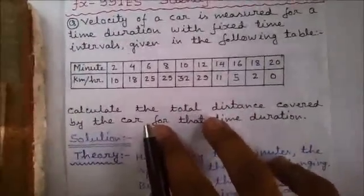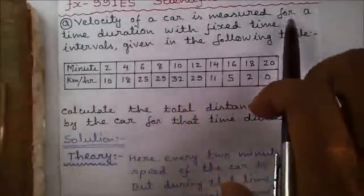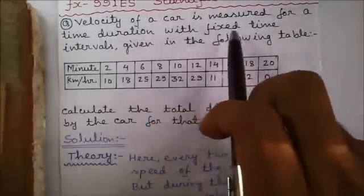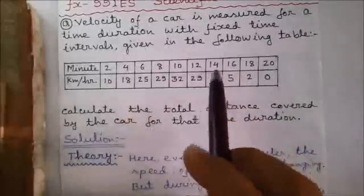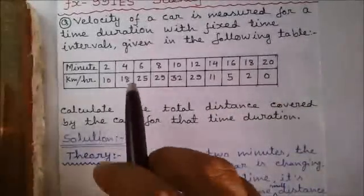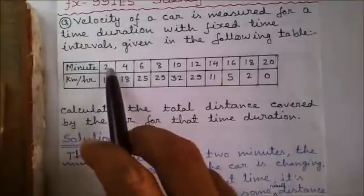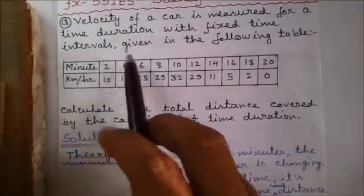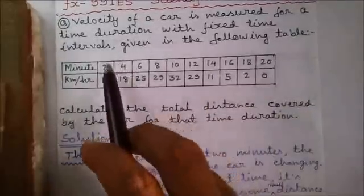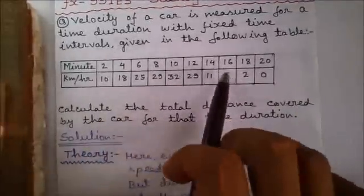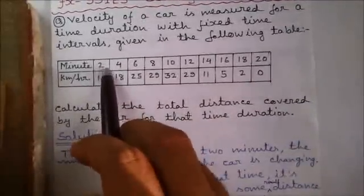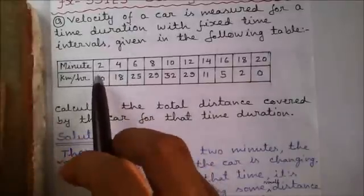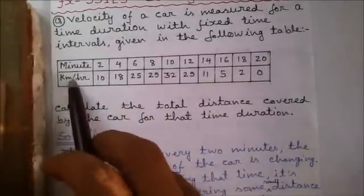Next, our question: velocity of a car is measured for a time duration with fixed time intervals given in the following table. Velocity of a car is measured from the second minute to the twentieth minute with the interval of two minutes, and for every particular time instance the velocity of a car is given below in kilometers per hour.